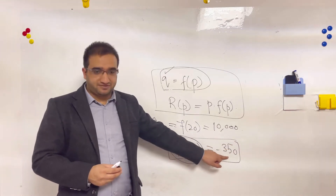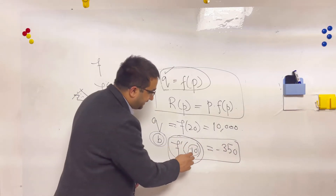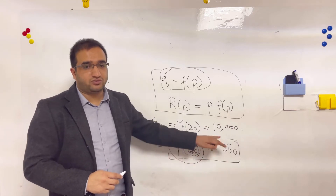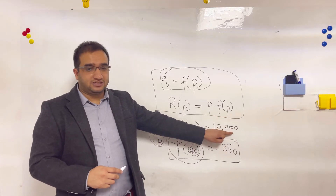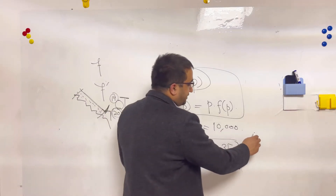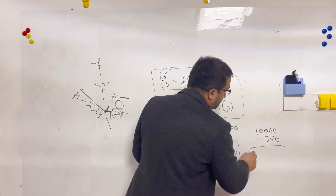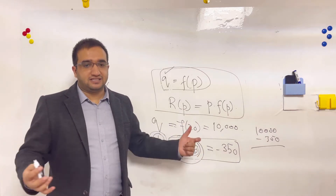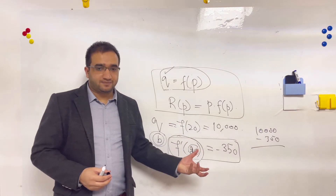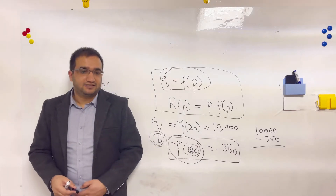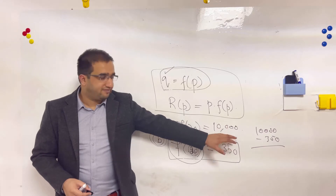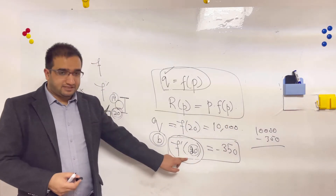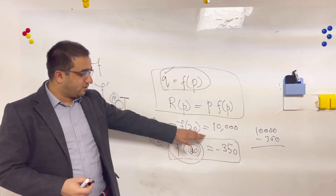The answer is -350: if you increase the price of one item by one dollar, your production will decrease by 350. If you are at price 20 and increase to 21, your production decreases by 350. This makes sense — if you increase the price, demand reduces; people won't buy because it's more costly, and if demand reduces, you must produce less.